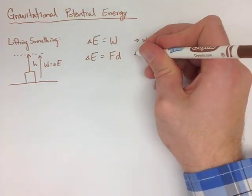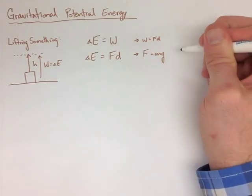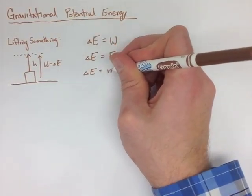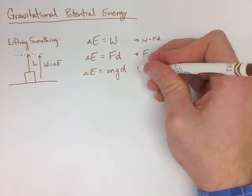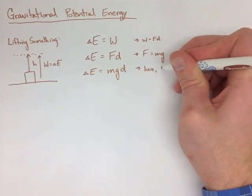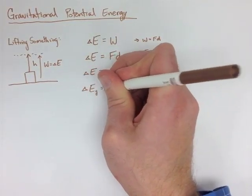So we get work is equal to force times displacement, that means the change in energy is equal to that. Force of gravity is equal to mg, and that's going to be mgd, but here we have d being equal to h.